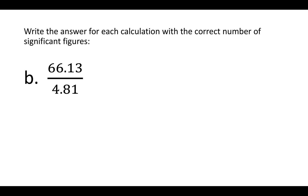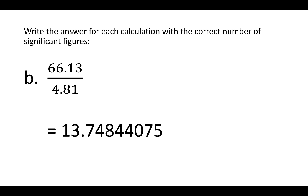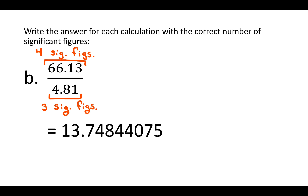First, just do the math — plug it into a calculator. You should get 13.74844075. Now go back to the numbers you multiplied or divided together. We're looking at the whole number, not just to the right of the decimal place. The number on the top, 66.13, has four significant figures — all non-zero numbers are always significant. The number on the bottom has three significant figures. So our less precise measurement has three significant figures, and our answer can't be any more precise than that — our answer should also only have three significant figures.